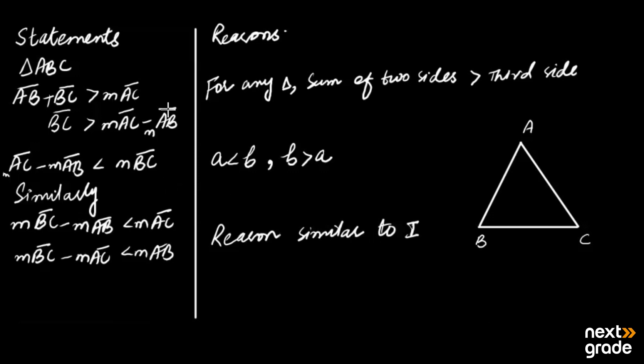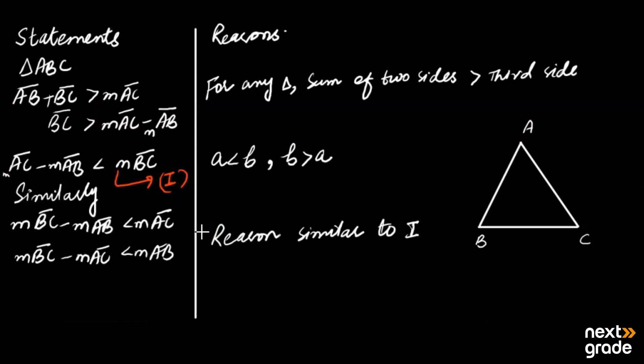If you have proved one part, you have to do the procedure using these two inequalities to find the result, writing the reason as 'similar to part two.' Then again, for the remaining results, we can similarly prove the statement by using the same procedure.